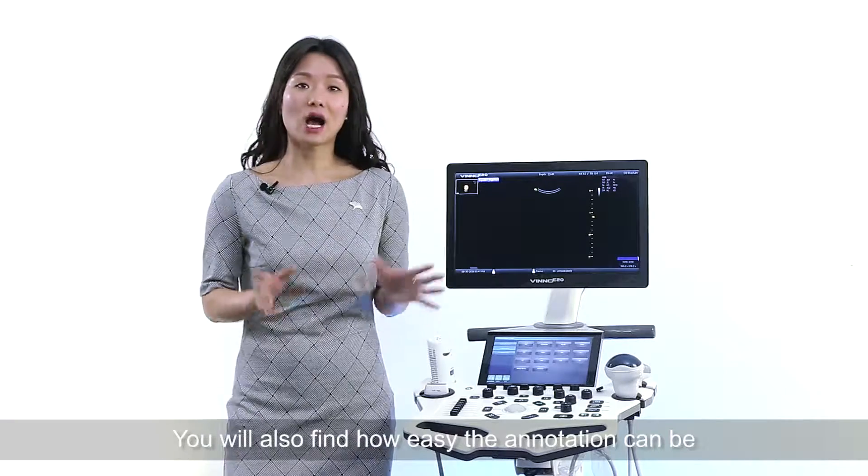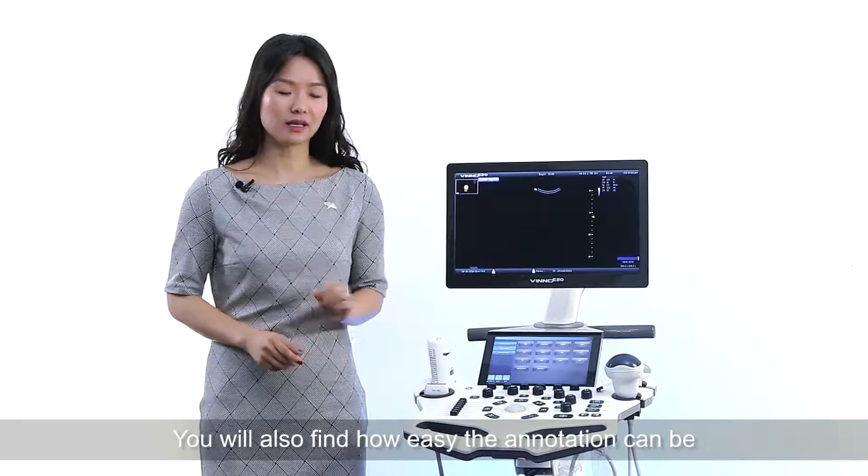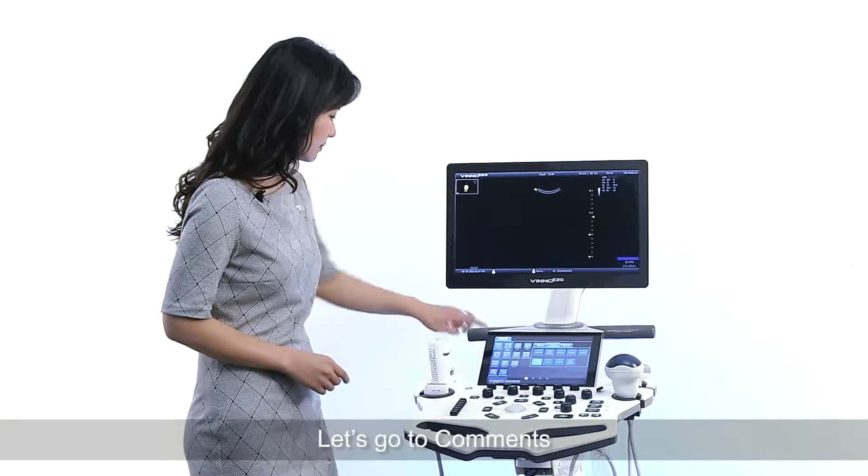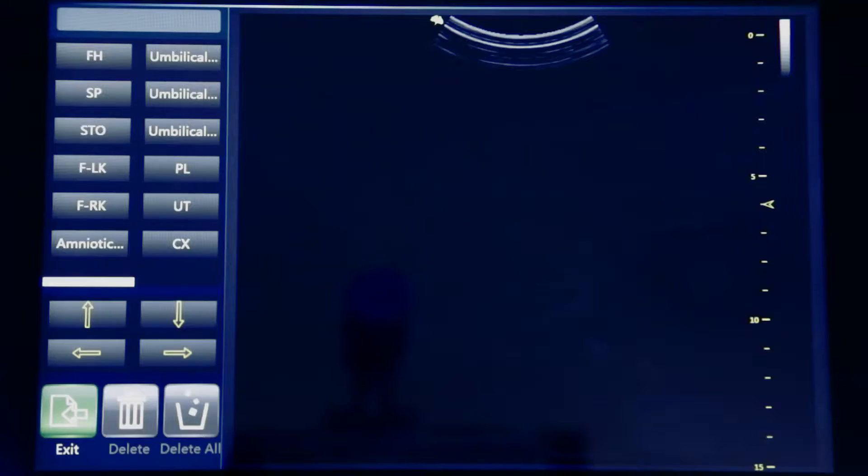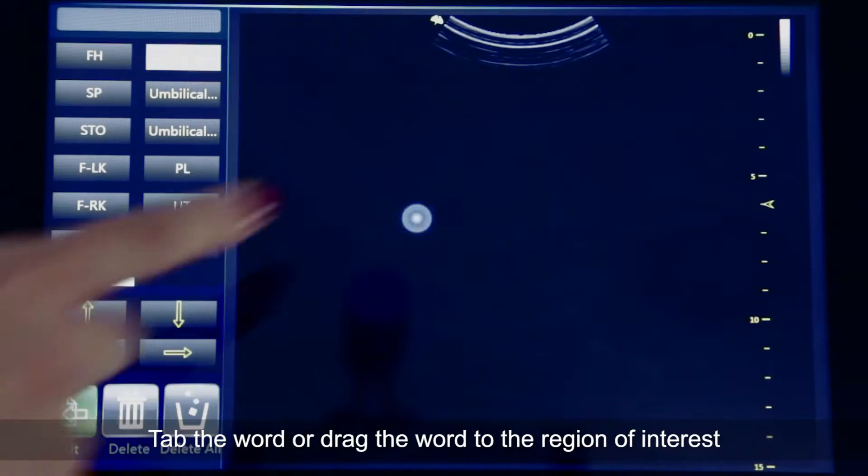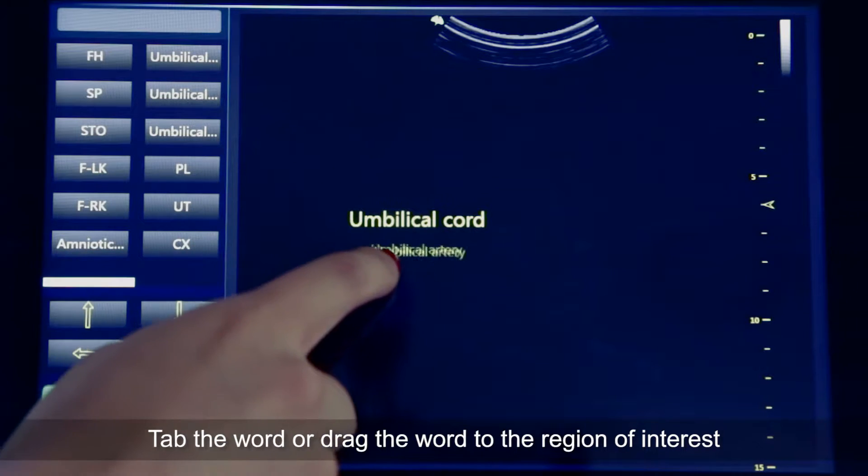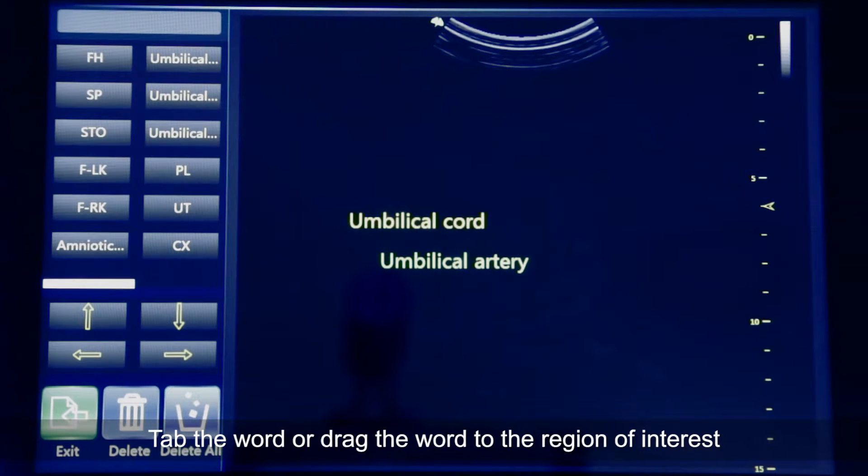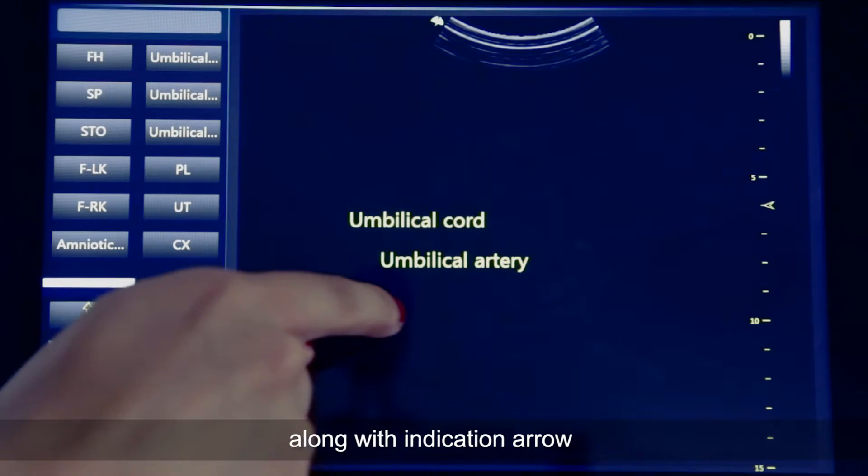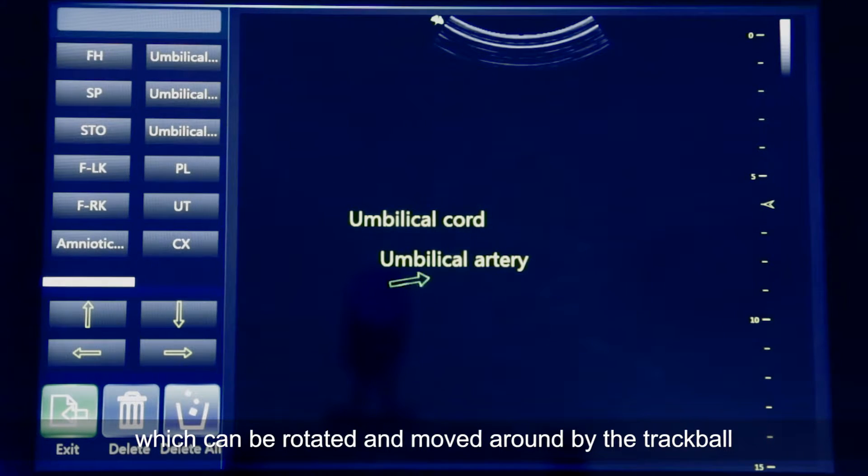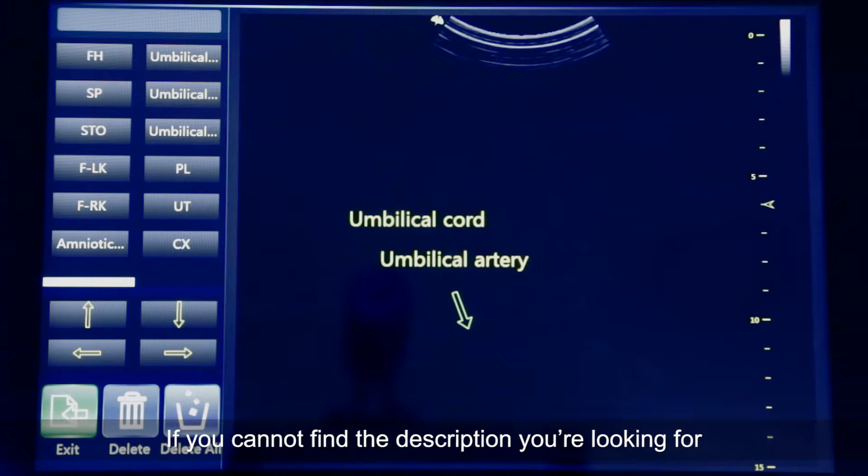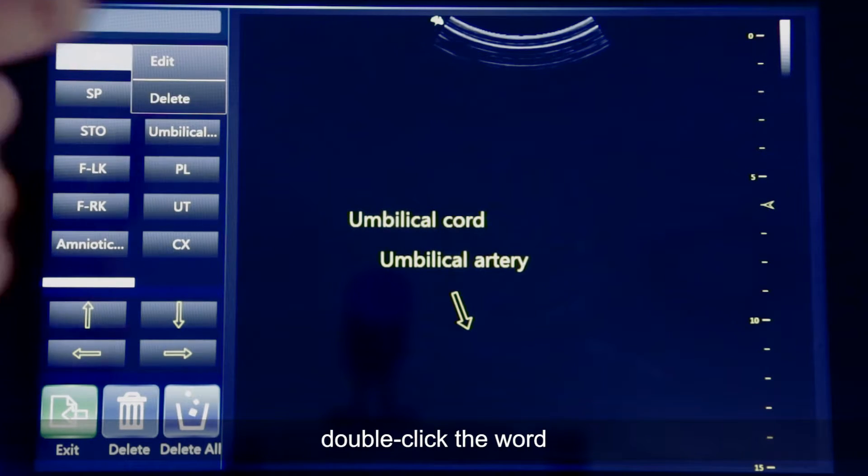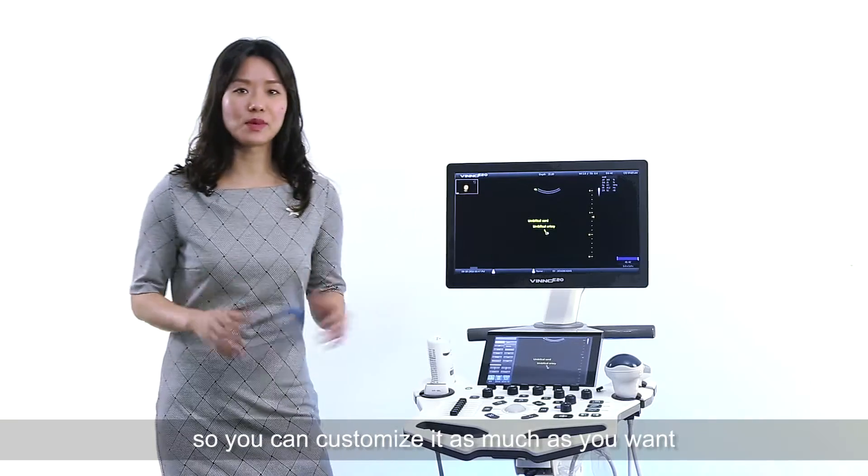You'll also find how easy the annotation can be. Let's go to the comments. Tap the word or drag the word to the region of interest along with the indication arrow which can be rotated and moved around by the trackball. If you cannot find the description you're looking for, double-click the word so you can customize it as much as you want.